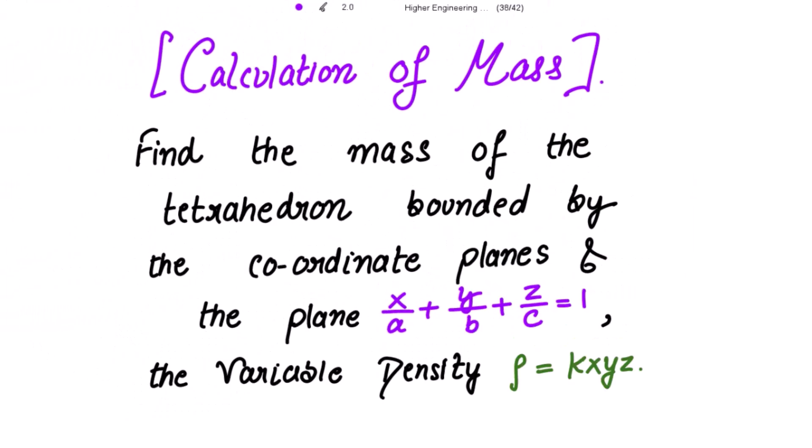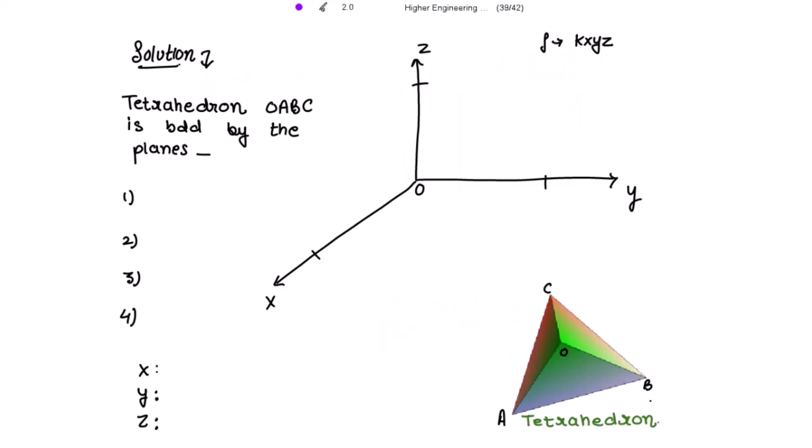We need to find the mass of the tetrahedron bounded by the coordinate planes and the plane x over a plus y over b plus z over c equal to 1. The variable density is given as rho equal to k x y z, where k is a constant.